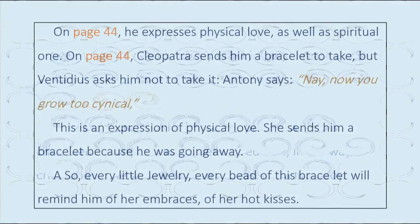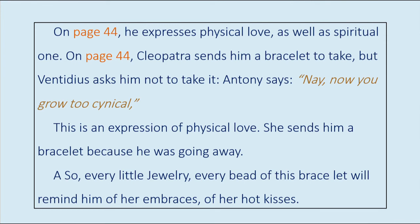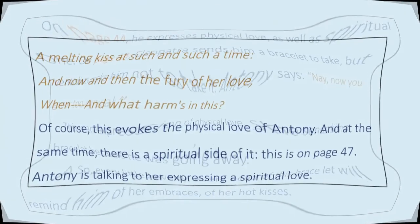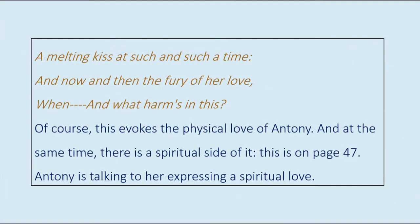On page 44, he expresses physical love as well as spiritual love. Cleopatra sends him a bracelet to take, but Ventidius asks him not to take it. Antony says: 'Nay, now you grow too cynical.' This is an expression of physical love — she sends him a bracelet because he was going away. Every little jewelry, every bead of this bracelet will remind him of her embraces, of her hot kisses, a melting kiss at such and such a time, and the fury of her love. This evokes the physical love of Antony, and at the same time there is a spiritual side of it.